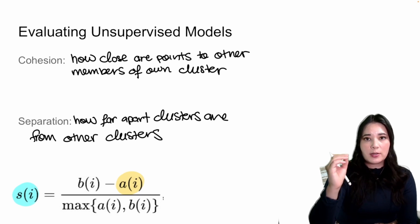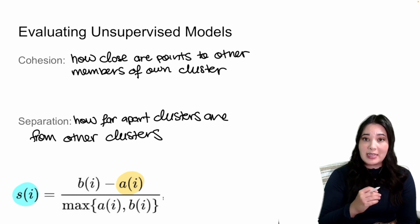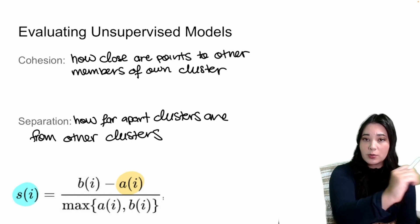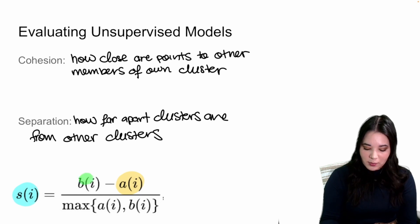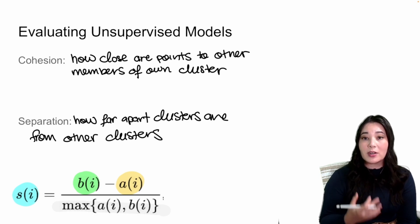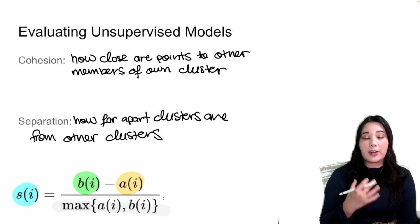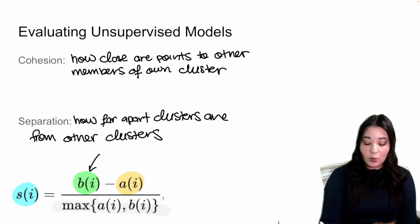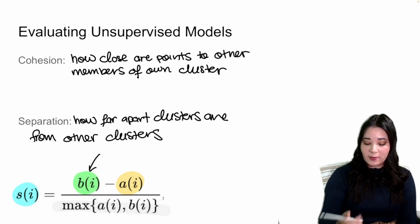For each data point we look at the distance between it and all members of its own cluster, take the average, and that's the 'a' term. We also measure how separate clusters are using the 'b' term — the average distance between a data point and the members of the next closest cluster. If our clusters are really separate, a data point should be pretty far from members of another cluster. We then divide by the maximum of 'a' or 'b' so that our silhouette score is scaled between negative one and one.